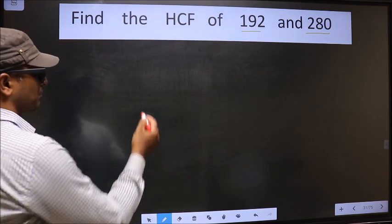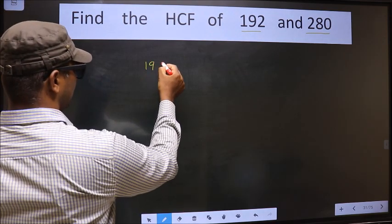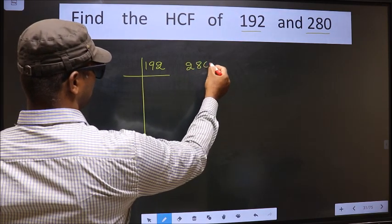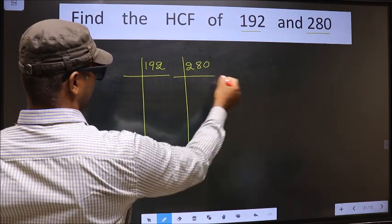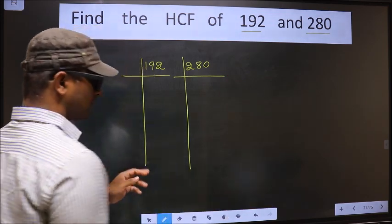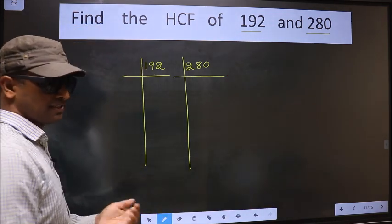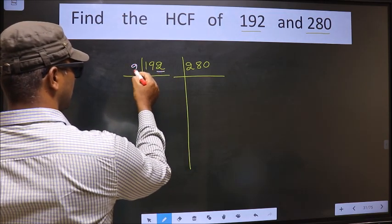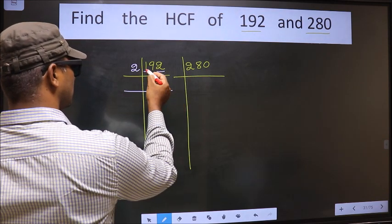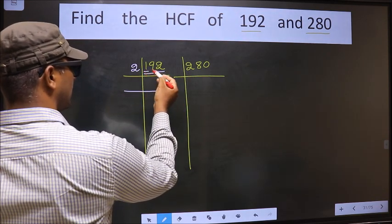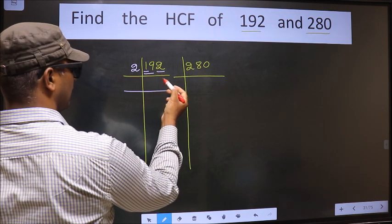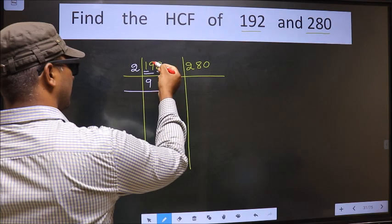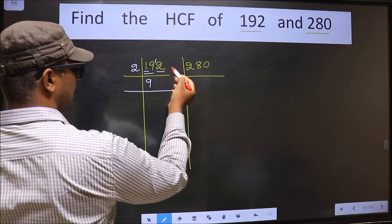That is 192 and 280. For this number, the last digit is 2, which is even, so we take 2 here. The first number is 1 — 1 is smaller than 2, so we take 2 numbers, that is 19. A number close to 19 in the 2 times table is 2 nines, 18. 19 minus 18 is 1, carried forward making it 12.